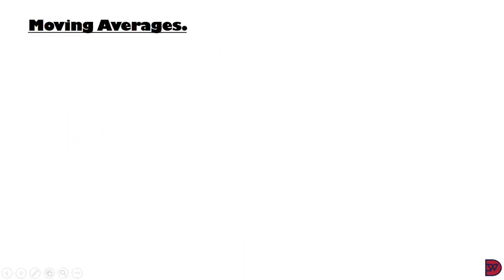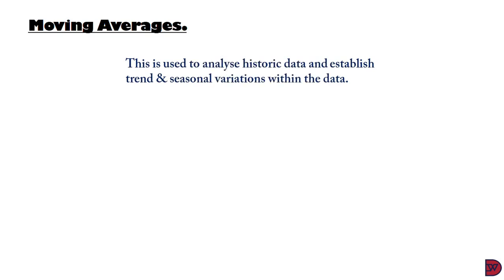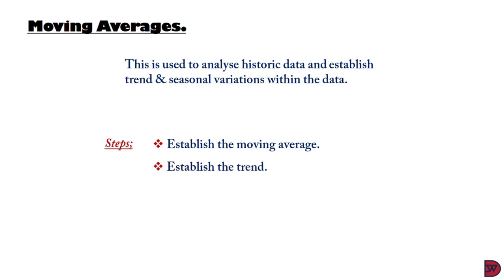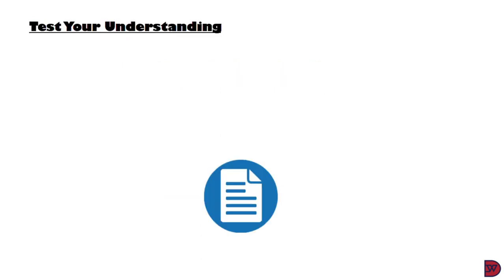Let's quickly discuss moving averages. Moving averages are used to analyze historic data to establish trends and seasonal variations within a set of data, which can be used to make necessary decisions for future business activities. Moving averages is one of the tools to help us get there. The steps are: first, establish a moving average; second, establish the trend; and finally, establish the variation.